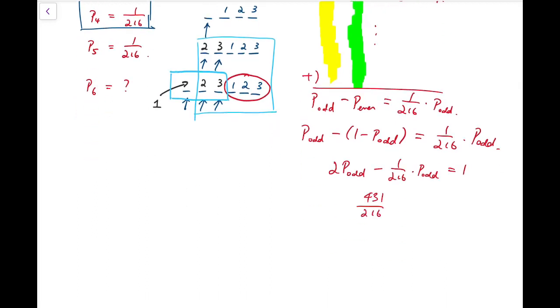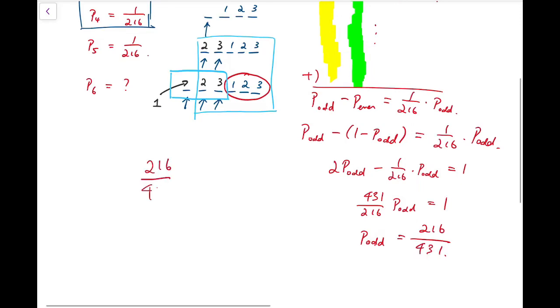So that's 431 over 216 times P_odd is 1. So the answer is actually 216 over 431. So that's the answer. And yay, we are done.